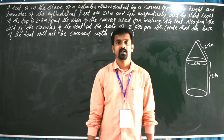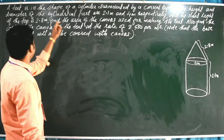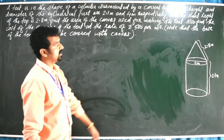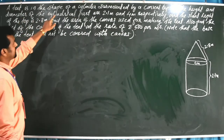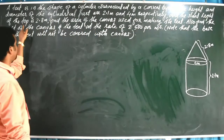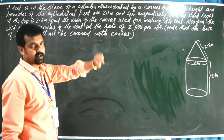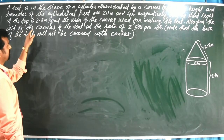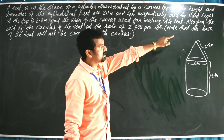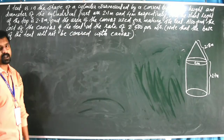Dear children, now I'm going to explain Exercise 13.1, Question number 7. A tent is in the shape of a cylinder surmounted by a conical top. The height and diameter of the cylindrical part are 2.1 metre and 4 metre respectively, and the slant height of the top is 2.8 metre. Find the area of the canvas used for making the tent, and also find the cost of the canvas at the rate of rupees 500 per metre square. Note that the base of the tent will not be covered with the canvas.